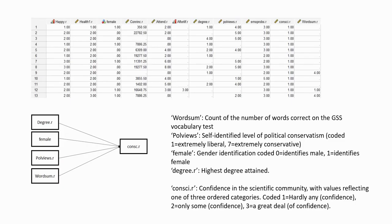So with that in mind, let's briefly look at our example data. What we're going to be doing here is predicting a person's level of confidence in the scientific community as a function of several variables, including the count of a number of words on a vocabulary test, self-identified political conservatism, gender identification, and also highest degree attained. This data is actually coming from the General Social Survey from 2018.